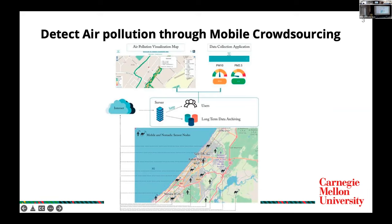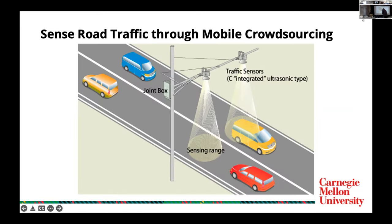Mobile crowdsourcing involves recruiting mobile workers with mobile devices to complete subtasks of an overall goal. For example, we can hire mobile workers to detect air pollution at different locations and then combine it into a city-wide map. Or, we can deploy sensors at different locations to sense road traffic.